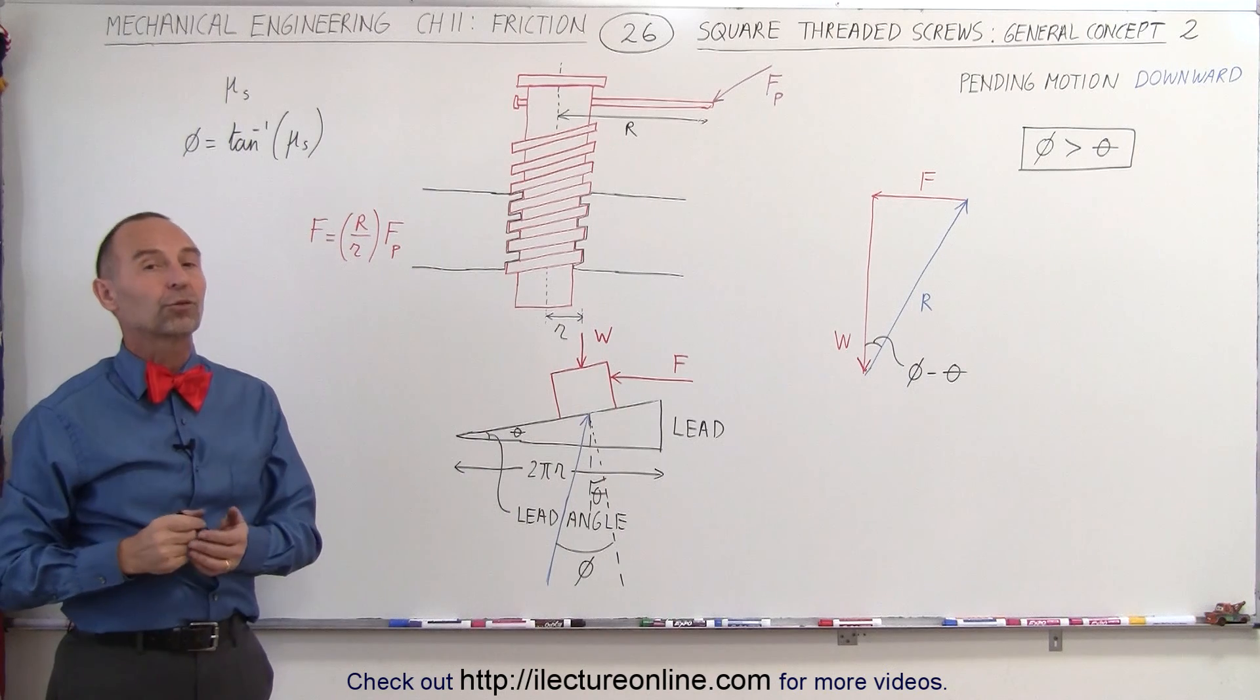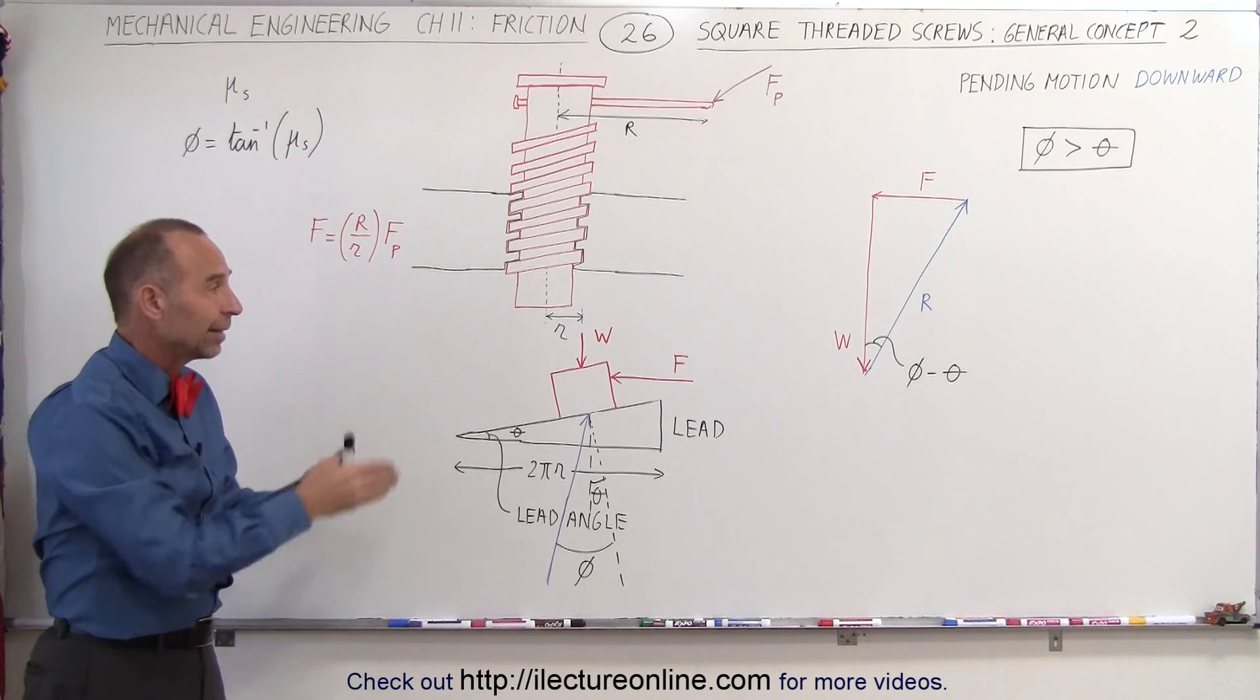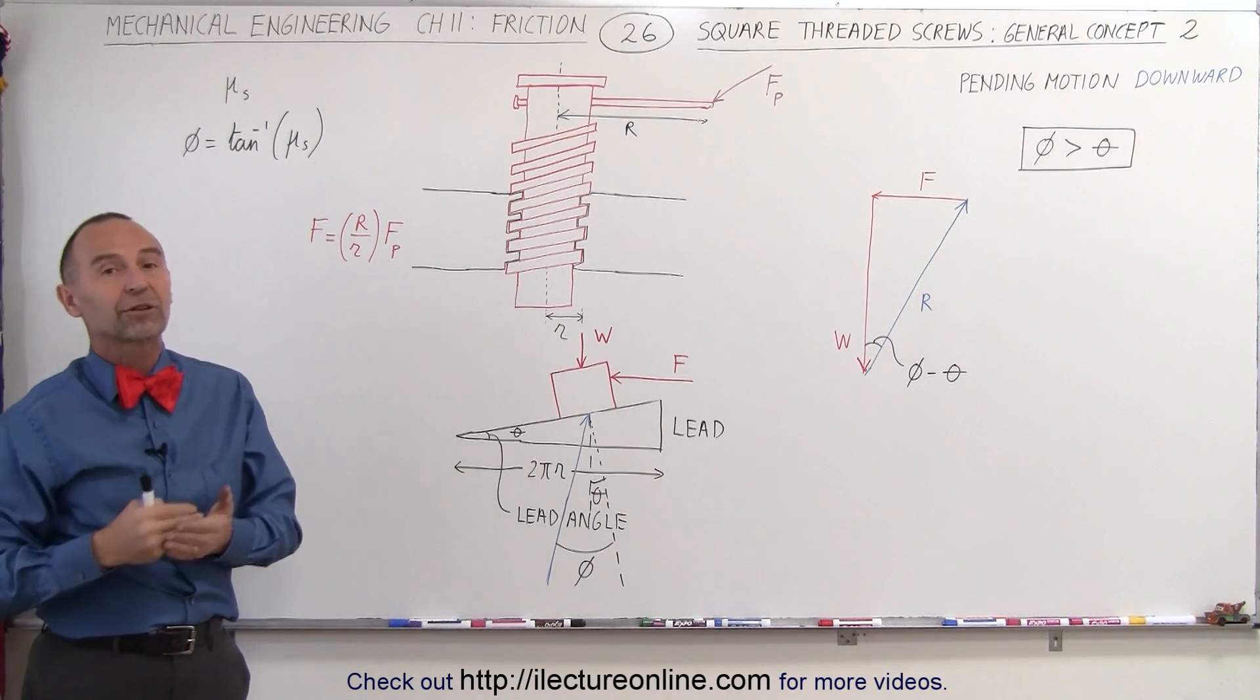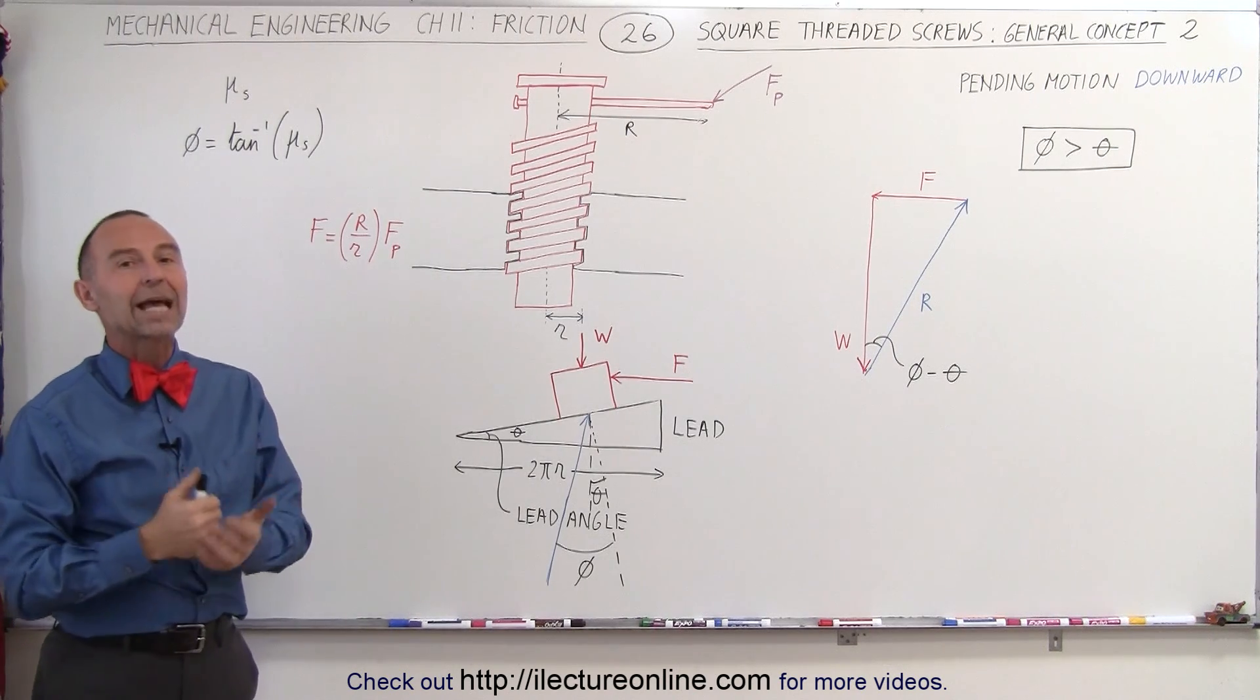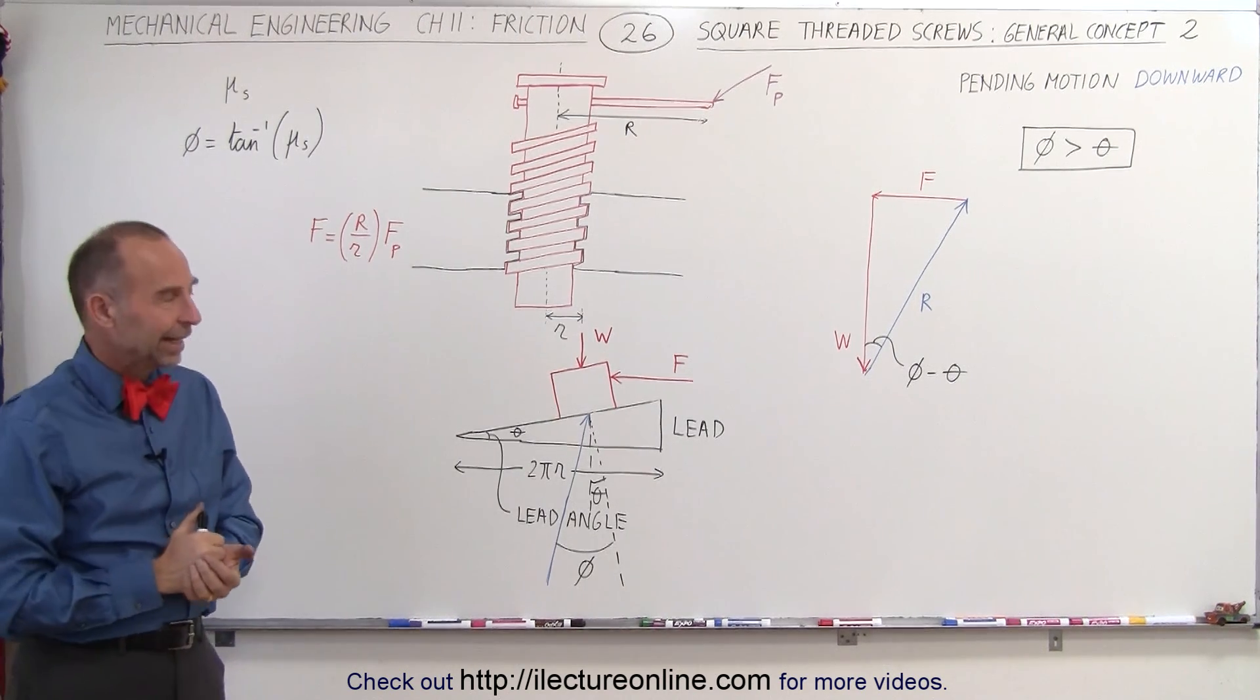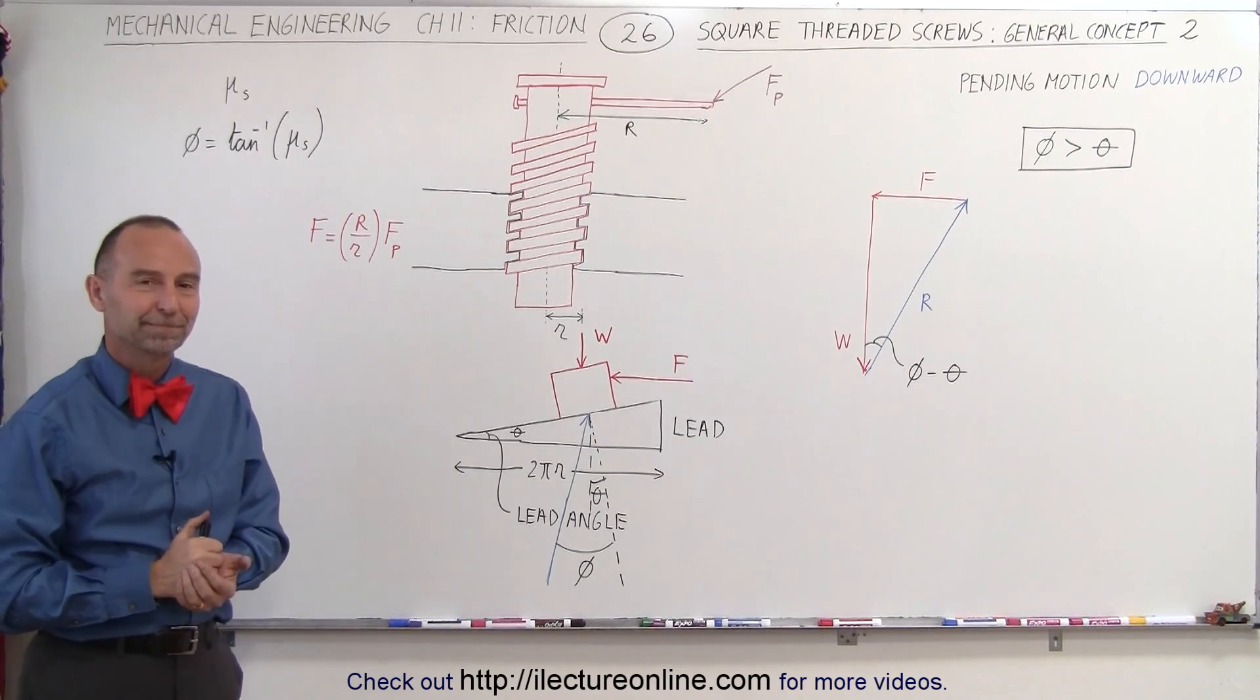And that's what the sum of the forces will look like in the case that the angle phi caused by the friction force is larger than the angle theta, which is the lead angle of the screw. And that's how it's done. Thank you.